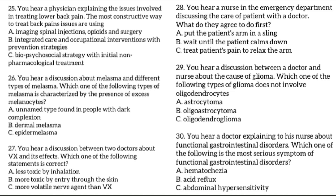There are four types of pigmentation patterns diagnosed in melasma: epidermal, dermal, mixed, and an unnamed type found in dark-complexioned individuals. The epidermal type is characterized by the presence of excess melanin in the superficial layers of skin. Dermal melasma is defined by the presence of melanophages throughout the dermis. The mixed type includes both the dermal and epidermal type. In the fourth type, excess melanocytes are present in the skin of dark-skinned individuals.